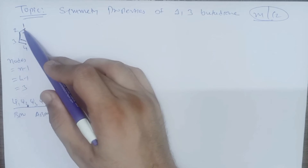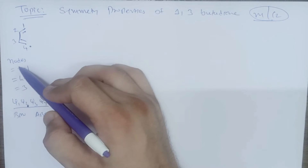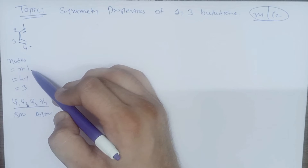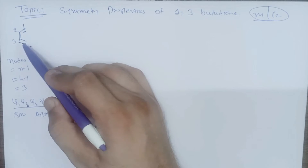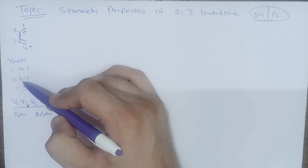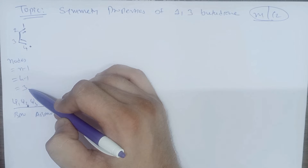Here we are having 4 pi electrons. So there will be nodes equal to n minus 1, where n is the number of pi electrons, that is 4. So 4 minus 1 equals 3, meaning we are having three types of nodes.